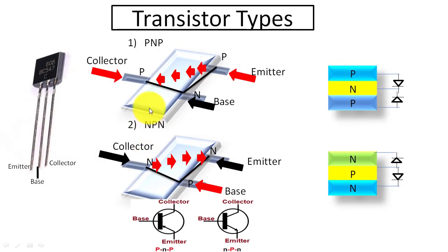Now I will discuss how many transistors are there and how a transistor works. There are two types of transistors: first is PNP transistor and second is NPN transistor.